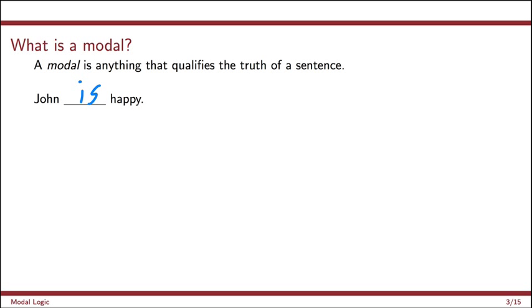And a modal is any word that we can use to qualify the truth of this sentence. So, for example, John might be currently happy now, but it may not be necessary that John is happy. Or perhaps John is currently not happy, but it's possible that he could become happy. So, John is necessarily happy. John is possibly happy. These words here, necessarily and possibly, are referred to as modals.